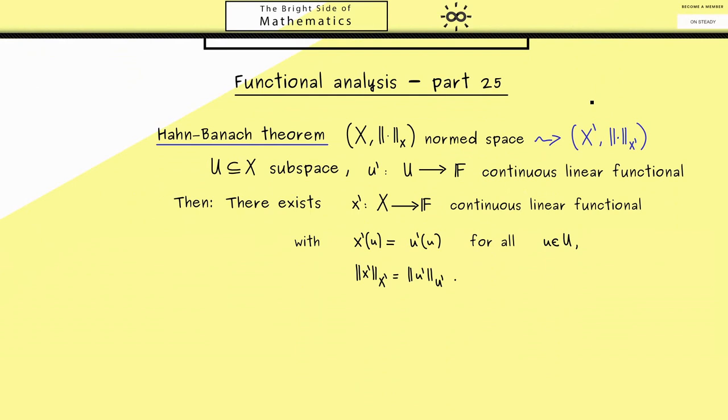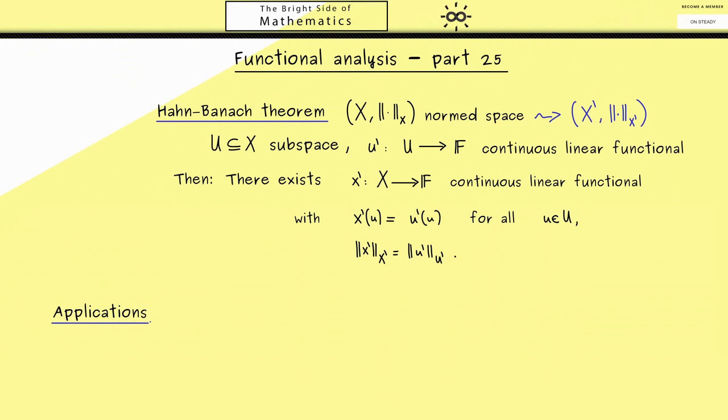Okay now I want to show you how this nice theorem is often applied. Therefore let X again be a normed space and the first thing I can tell you is that we find for all points in X a special functional. The only point I want to exclude is the zero vector. Now the continuous linear functional x prime should have norm 1 and should also send the point x itself to the norm of x. This now already tells us that if we have a lot of points x in X then we find a lot of continuous linear functionals.